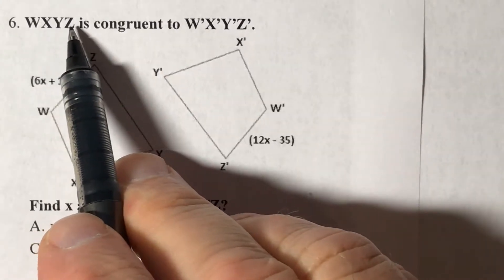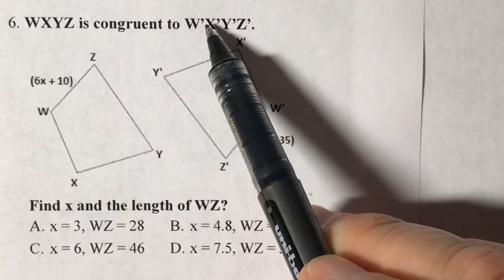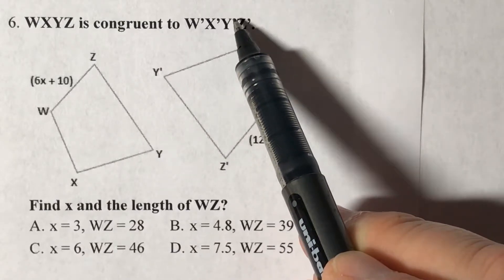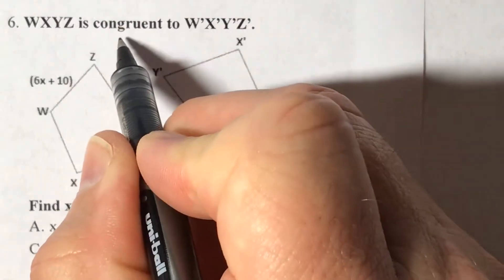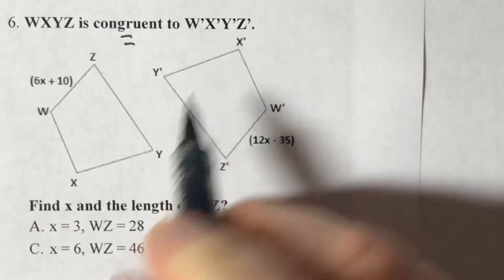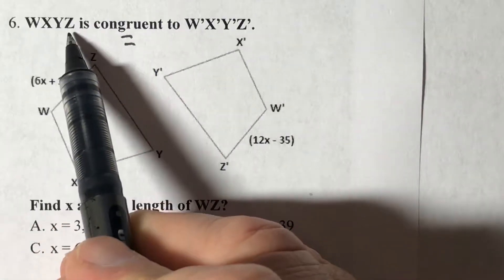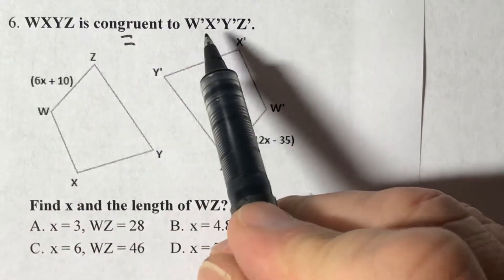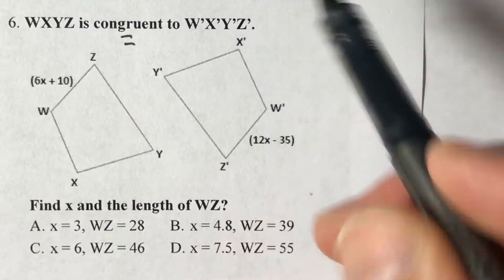WXYZ is congruent to W'X'Y'Z'. Congruent means equal, so this equals this. We are given WZ, which will correspond to W'Z'.